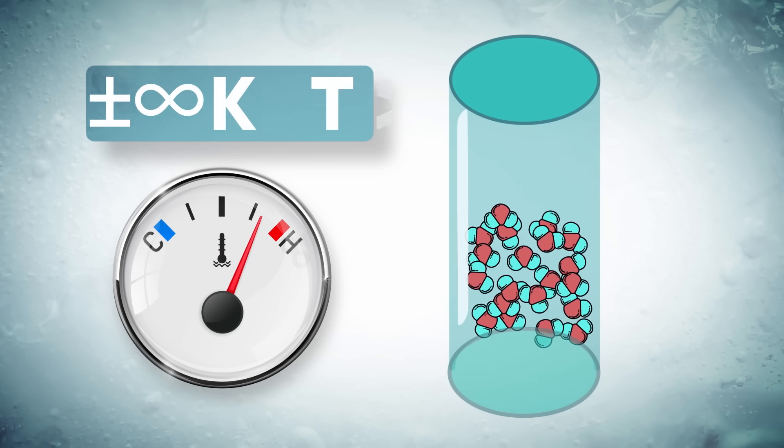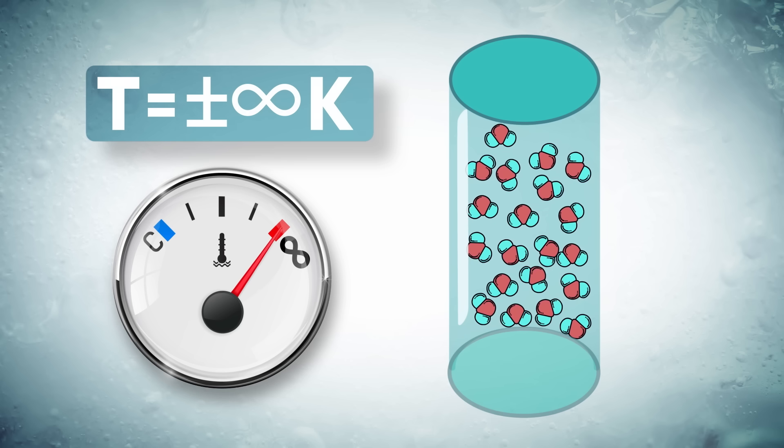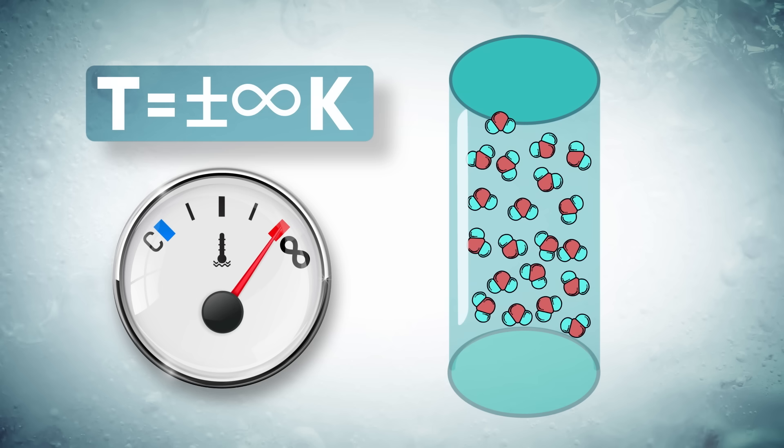And once we get the system all the way up to infinite temperature, we're dividing by such a large number that 1 over T is effectively 0. In other words, infinite temperature is 0 coldness, which also sounds right to me. And as we've already established, the distribution looks like this. All particles are equally distributed across the possible energy levels.